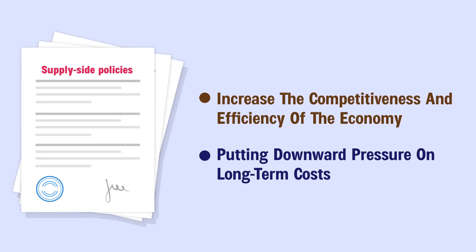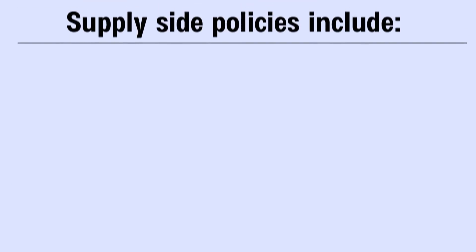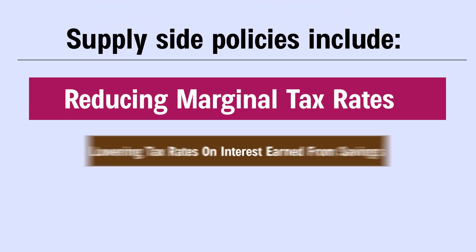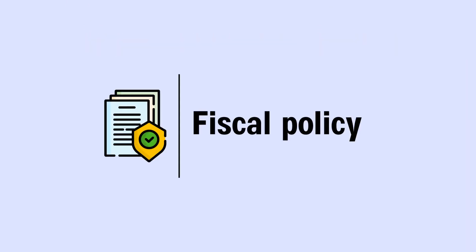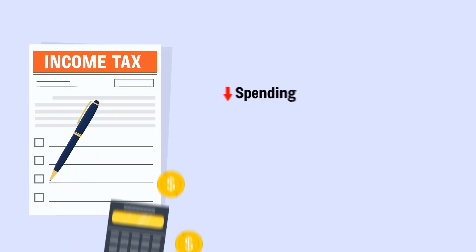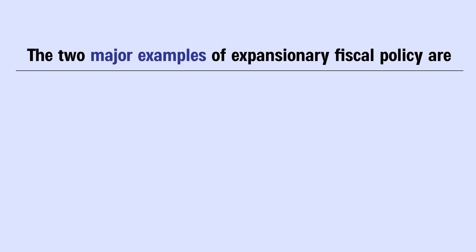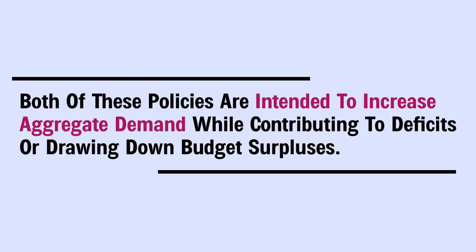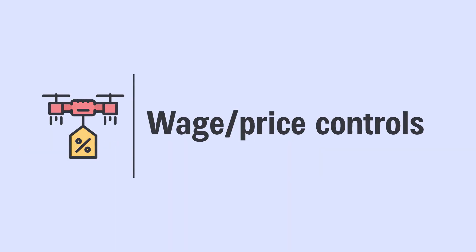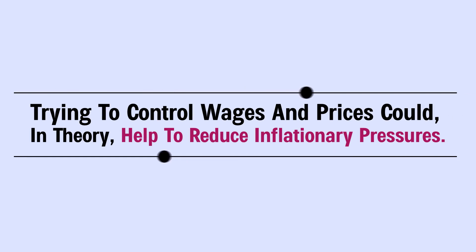Supply-side policies aim to increase the competitiveness and efficiency of the economy, putting downward pressure on long-term costs. These include reducing marginal tax rates, lowering taxes on interest earned from savings, and privatizing public industries. Fiscal policy is another tool: a higher rate of income tax can reduce spending, demand, and inflationary pressures. Tax cuts and increased government spending are examples of expansionary fiscal policy intended to increase aggregate demand, though they contribute to deficits or draw down budget surpluses.